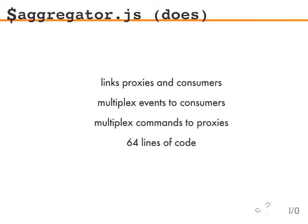What does aggregator.js do? It links the proxies to the consumers and multiplexes every event. The proxies send their JSON strings down, and if I connect a consumer on the back end, I get the full stream across all proxies. If I have 300 proxies, they all send their events through the aggregator and every single consumer gets the same set of events. The aggregator is a very, very simple pub/sub server — 64 lines of Node.js.